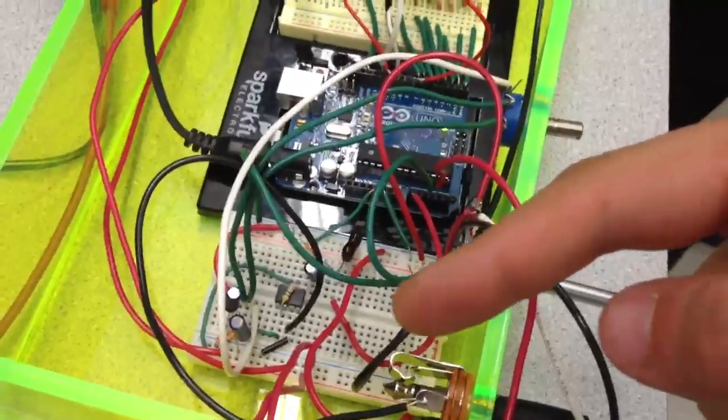Then we take the input from this accelerometer and the guitar and plug it into the Arduino. Before we do that, we have to preamplify the signal from the guitar because it would be too weak for the Arduino to read otherwise.